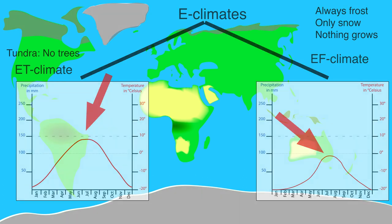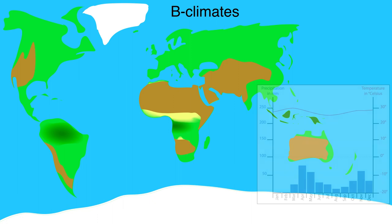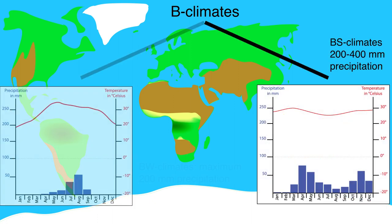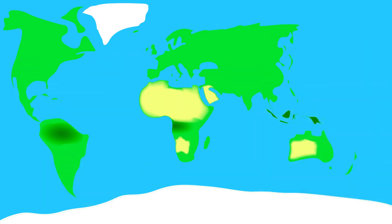At the B climates there is a distinction between BS climates, where there is still a bit of precipitation, and BW climates, where there is almost no precipitation. BS climates are the semi-arid areas where there is on average between 200 and 400 mm of precipitation per year. BW climates are the deserts where less than 200 mm of precipitation falls per year. No trees grow in either the BS or the BW climates.